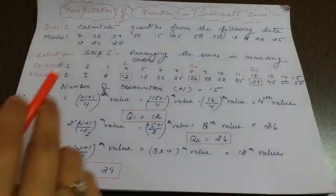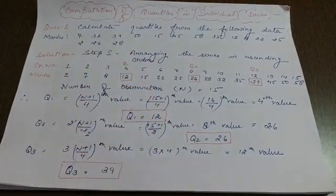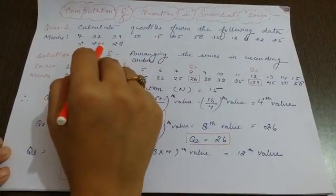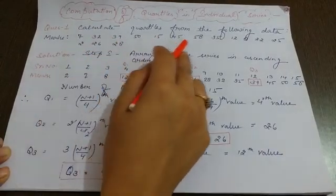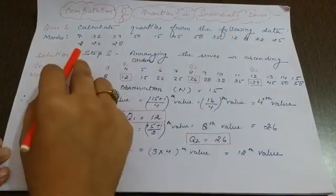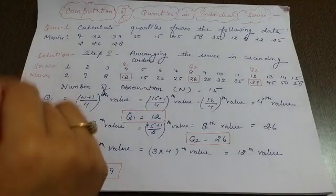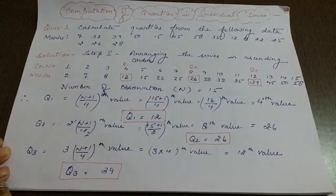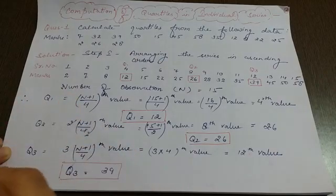Now let me explain one example for obtaining the values of Q1, Q2, and Q3 in individual series. The marks obtained from a number of students are: 7, 32, 39, 50, 15, 45, 58, 35, 12, 8, 22, 25, 2, 26, 28. This is the whole series of frequency, and we are going to divide it into four equal parts to obtain the three points — first quartile, second quartile, and third quartile. First, the series will be arranged in ascending order.